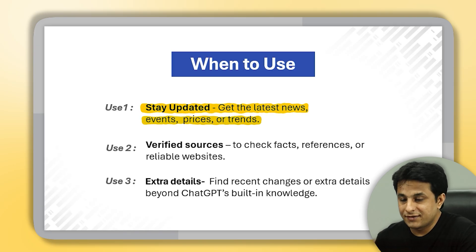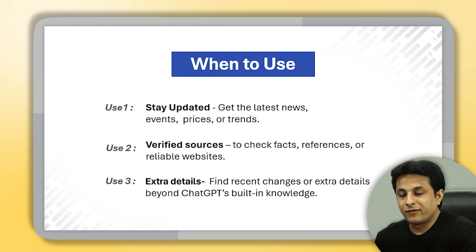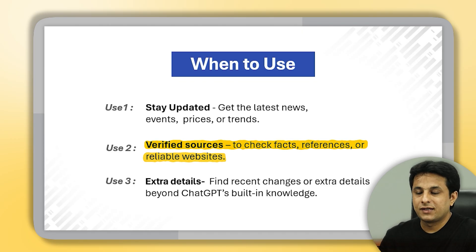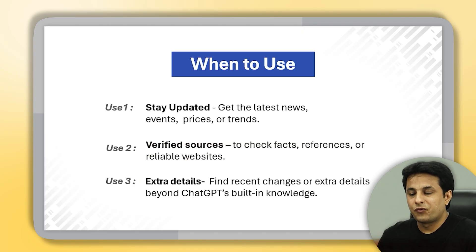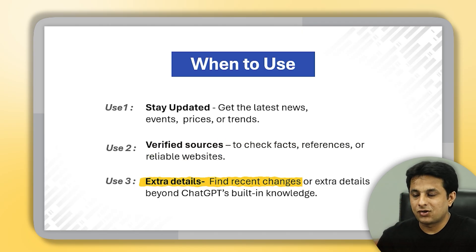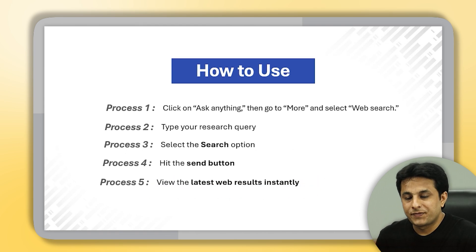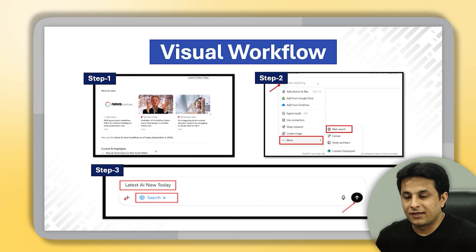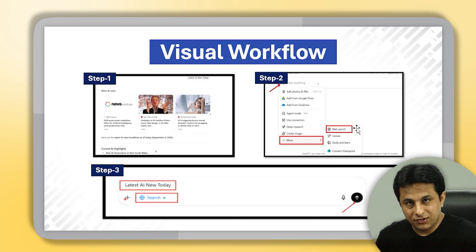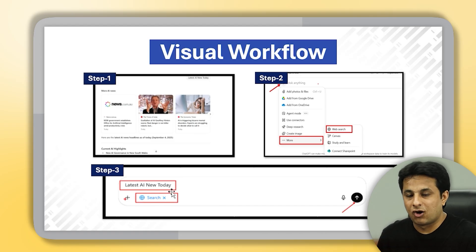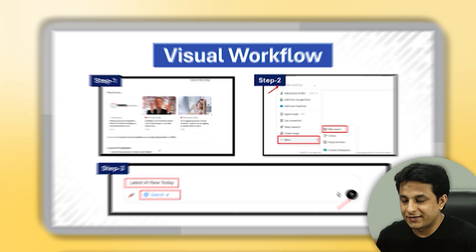When should you use it? If you want the latest news — events, prizes, or trends — and if you want to verify sources, check facts, references, or reliable websites, and also find out recent changes or extra details beyond ChatGPT's built-in knowledge. The steps are very simple: when you open ChatGPT there's an option called web search, and if you click on that you can search right there.